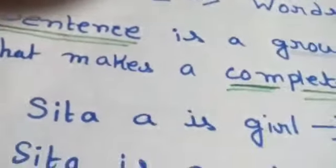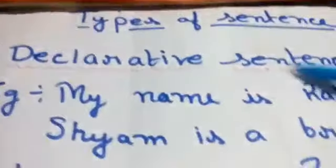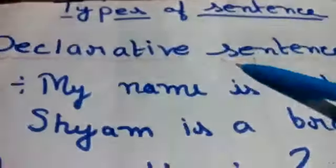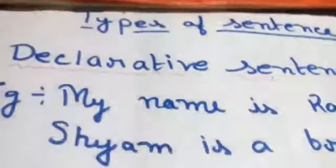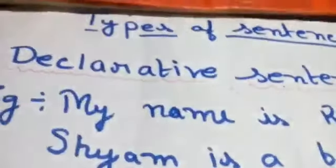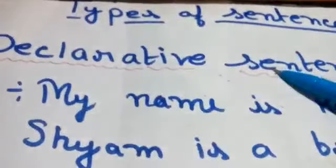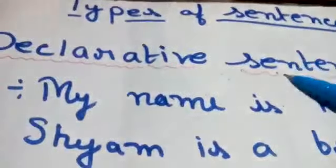So let's learn about the types of the sentence. Number one is declarative sentence. We can also call a declarative sentence a positive sentence or a statement.